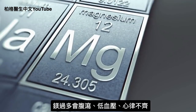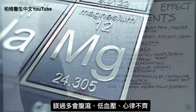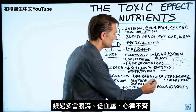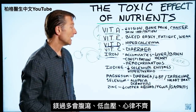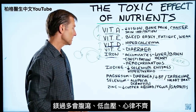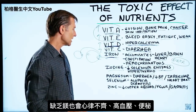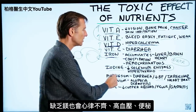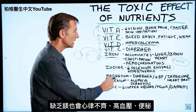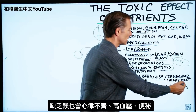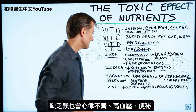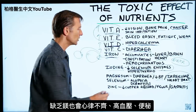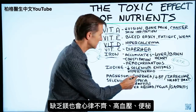With magnesium, side effects from too much include diarrhea, low blood pressure, and irregular heartbeats. Interestingly, if you don't have enough magnesium, you also get irregular heartbeats and high blood pressure, as well as constipation — so the deficiency and excess can share some symptoms.